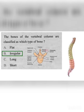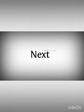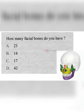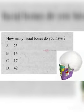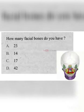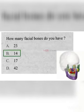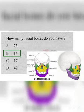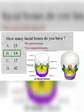For example, the vertebrae are the irregular bones of the vertebral column. How many facial bones do you have? A. 23, B. 14, C. 17, D. 42. The correct answer is B. 14. The facial bones include 14 bones with 6 paired bones.